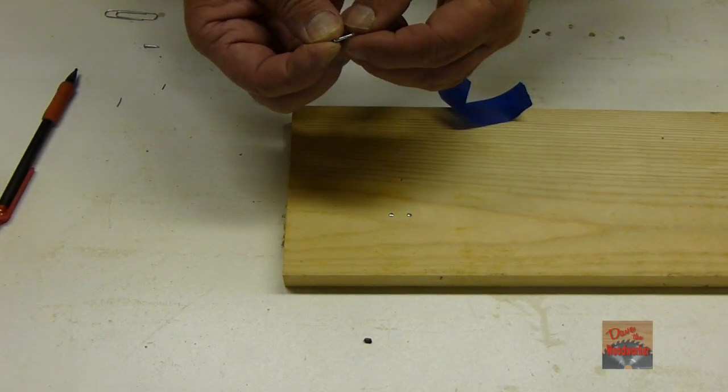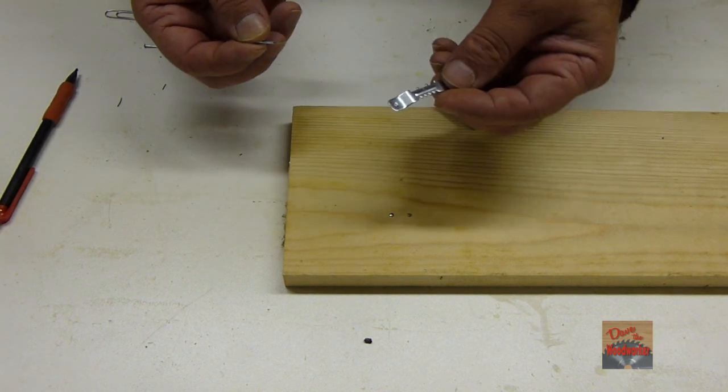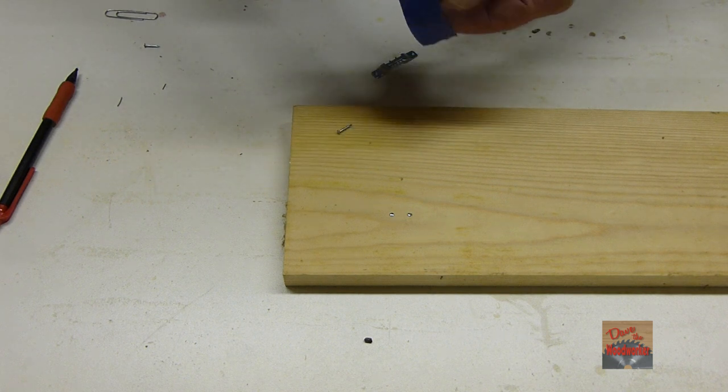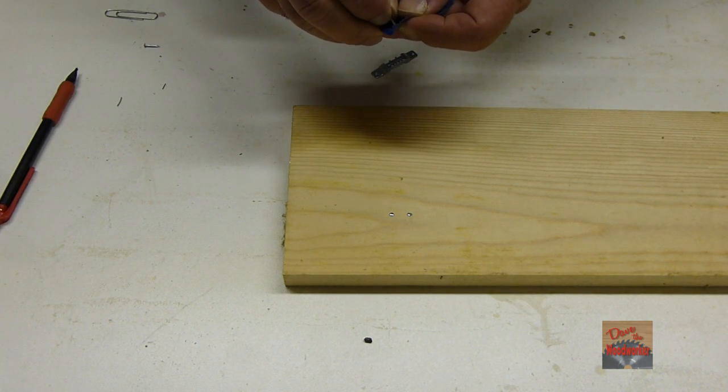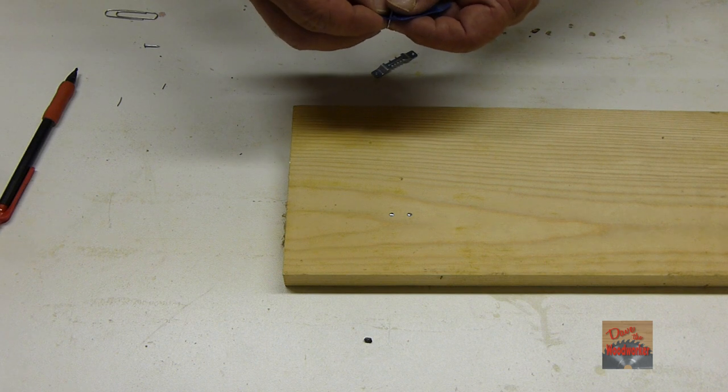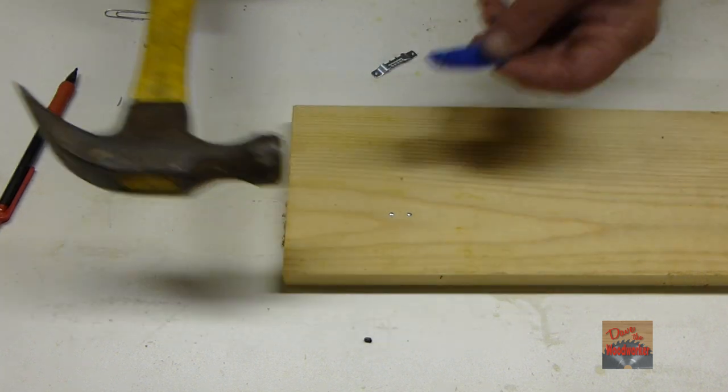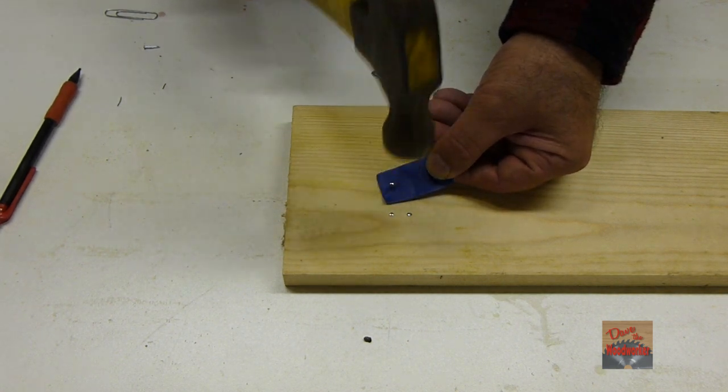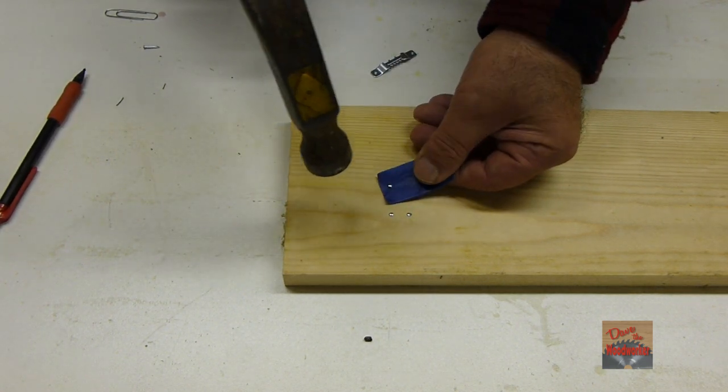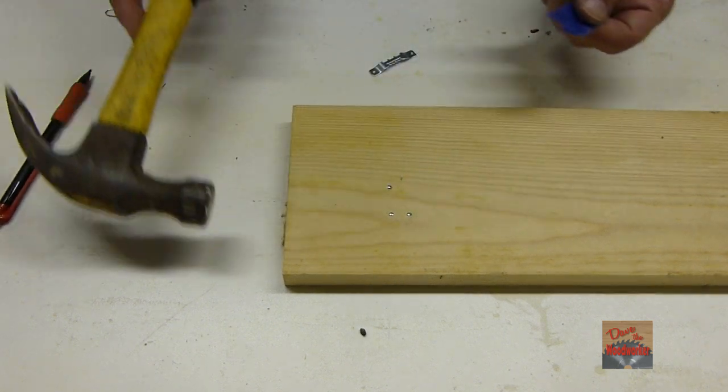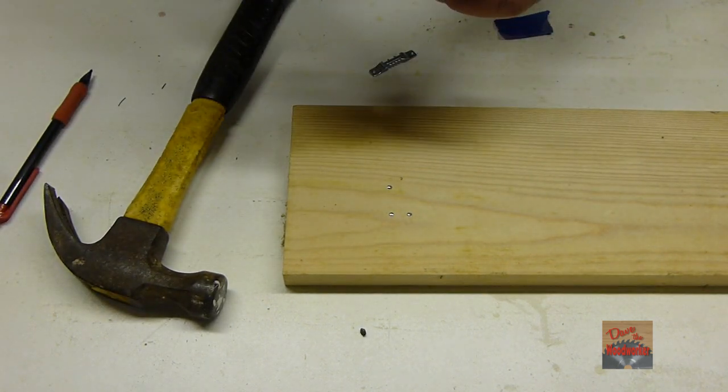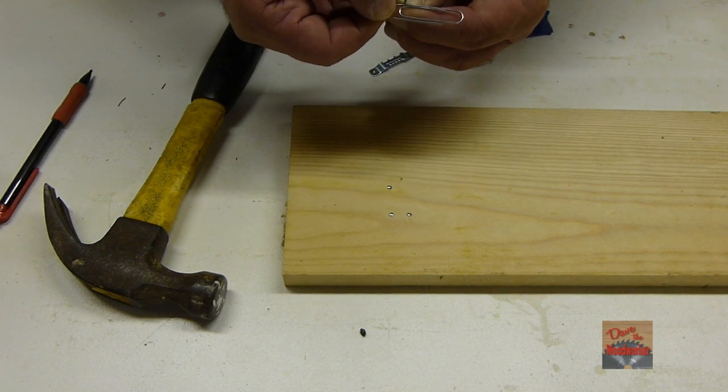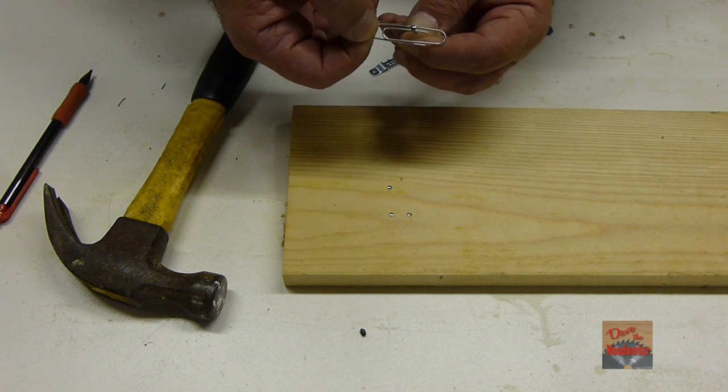When nailing little nails that come with these hinges, take a piece of painter's tape, then punch it through. When you get it, you can also use a paper clip—just slide it over. This will keep you from mashing your fingers when you've got small nails.